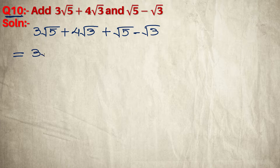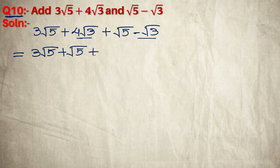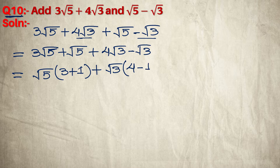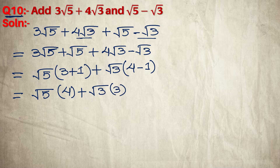Like terms: 3 root 5 plus root 5, and another like term 4 root 3 minus root 3. This gives 4 root 5 plus 3 root 3 as the answer.